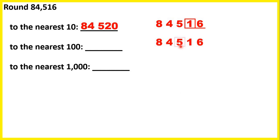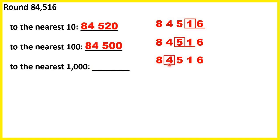To the nearest 100, we find our hundreds digit. Looking to the right, we have a 1 — which is 4 or less, so we round down. The circled digit stays the same, digits to the left stay the same, digits to the right turn into zeros, giving us 84,500. To the nearest 1,000, we find our thousands digit. Because we have a 5 in our hundreds — the place value to the right — we round up. The 4 becomes a 5, the 8 stays the same, and digits to the right turn into zeros, giving us 85,000.